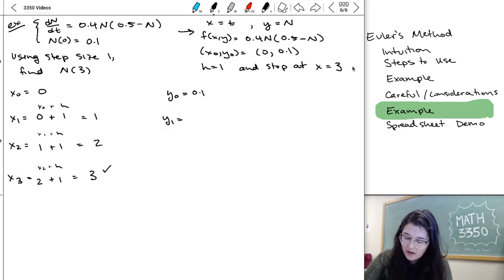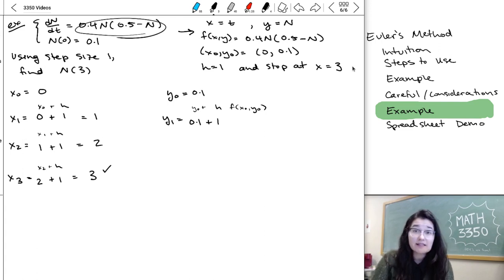So y1 is given by y0 plus h times f of x0, y0. So, that's my previous y value, 0.1, plus my step size, 1, times f. That's this thing, but I plug in x0, y0.